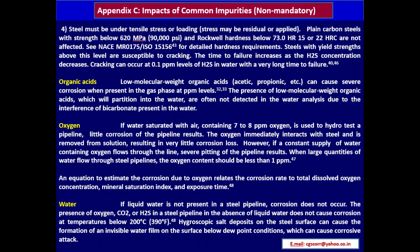Organic acids: low molecular weight organic acids (acetic acid, propionic acid) can cause severe corrosion when present in the gas phase at ppm levels. They partition into water and are often not detected in water analysis due to interference from bicarbonate. Oxygen: if water saturated with air (7–8 ppm oxygen) is used to hydrotest a pipeline, little corrosion results, as oxygen immediately interacts with steel and is removed from solution. However, if a constant supply of oxygenated water flows through the line, severe pitting results. With large quantities of water flow, the oxygen content should be less than 1 ppm. An equation relates corrosion rate to total dissolved oxygen concentration, mineral saturation index, and exposure time.